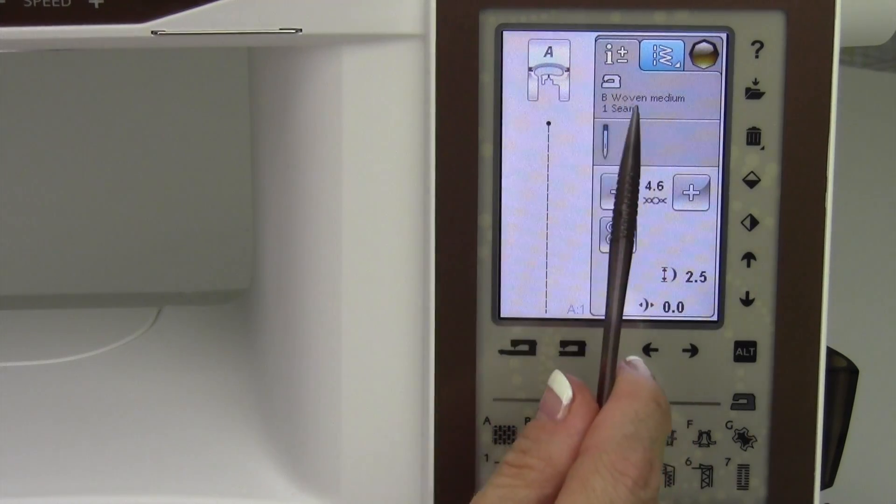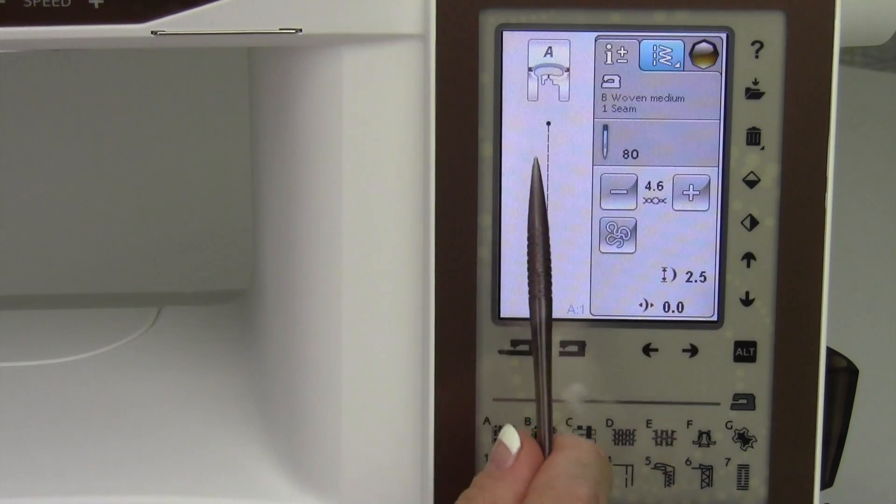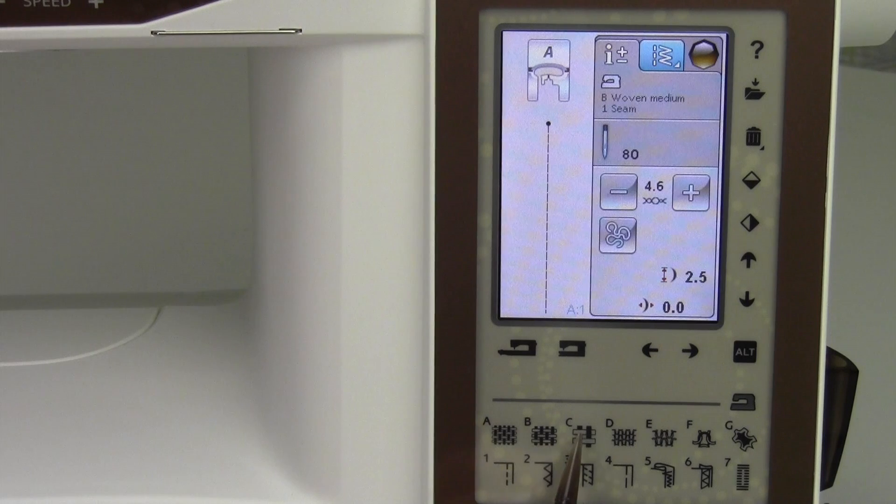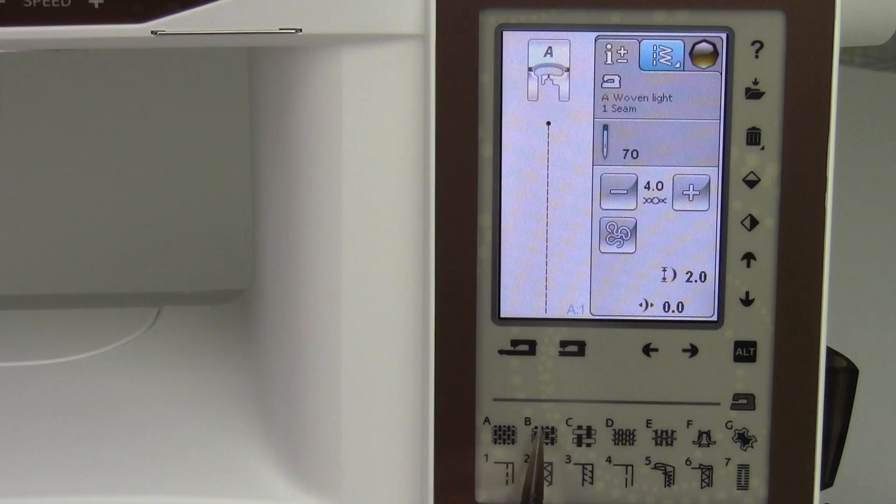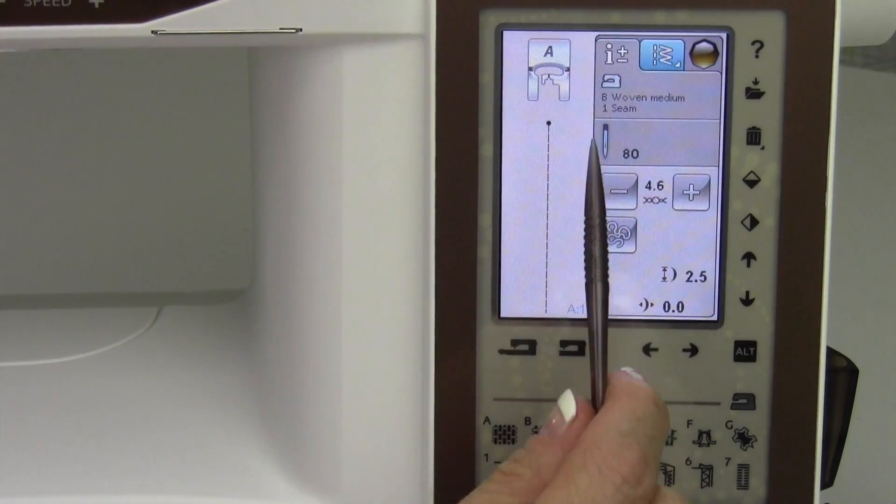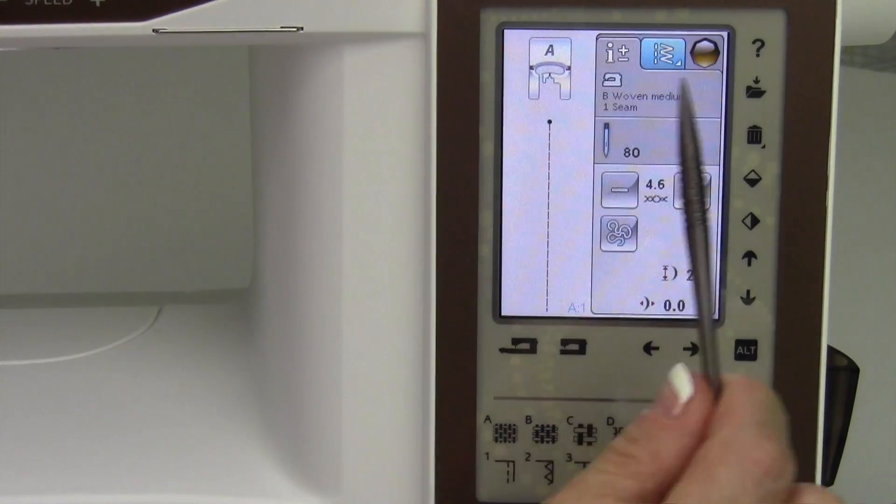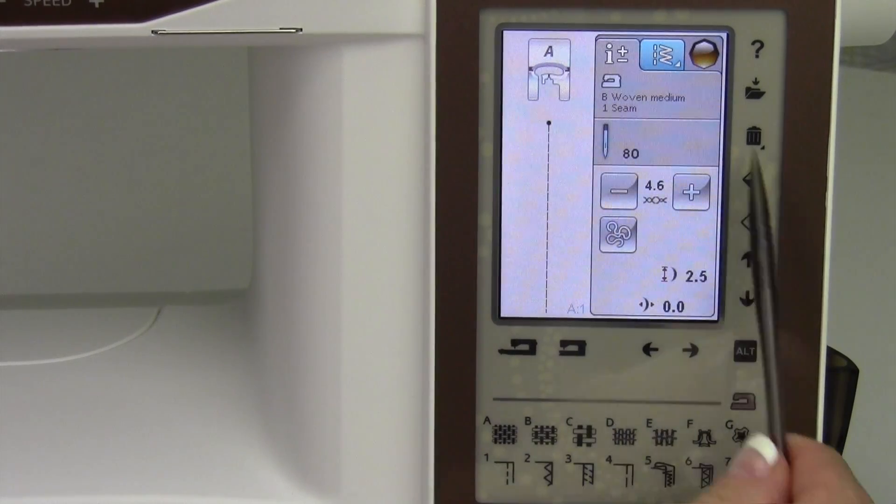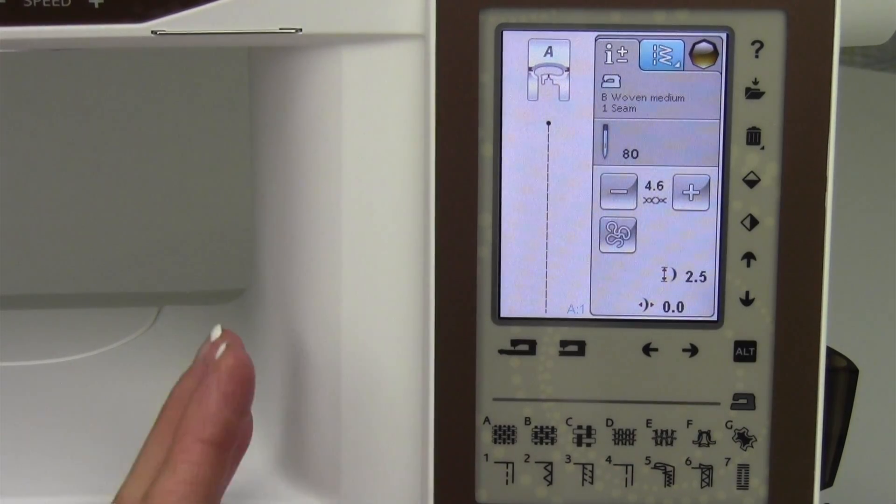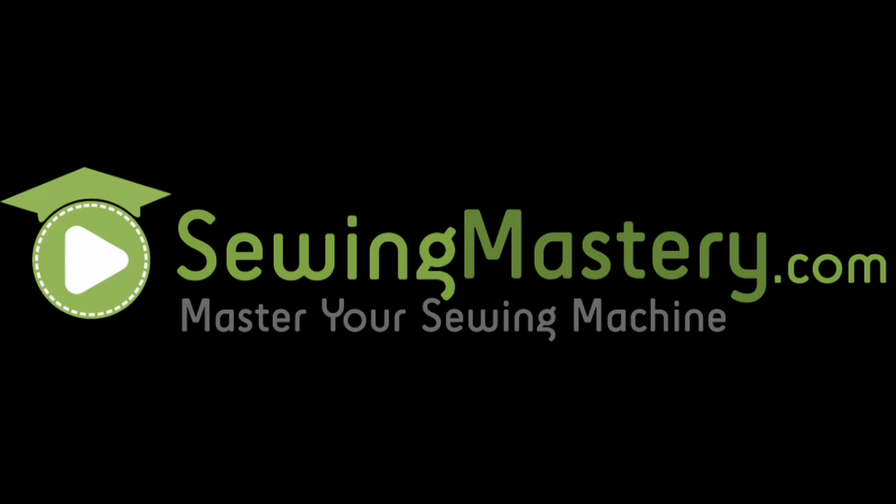Then whatever fabric you've selected, that will indicate what stitch length will be selected for starting out, which you could of course change. But if you picked a different fabric, it would change the stitch length for you. That's why I always say fabric B is a woven medium fabric seam, easy to get to. And of course, if you turn your machine off and on, that will also bring you back to a straight stitch.